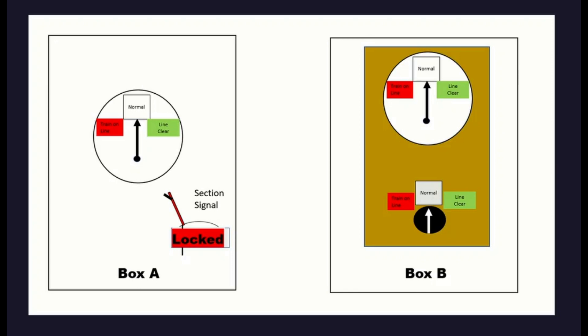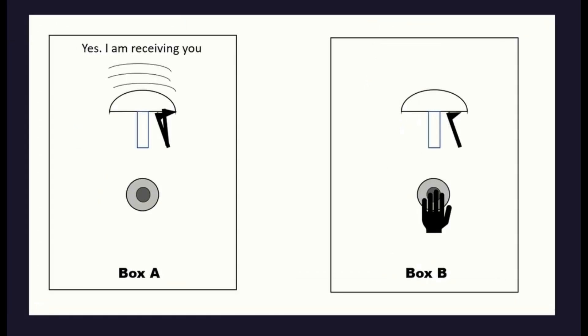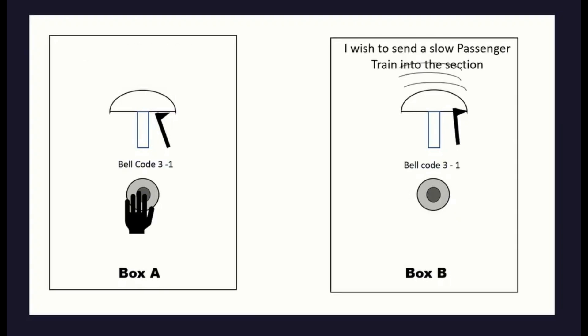Let us look at a train being released into a section. We'll start from scratch — no trains in the section. Indicators at both boxes are at normal. The commutator at box B is set to normal and the section signal at box A is locked. Box A wants to send a train into the section. The signaller at box A presses the bell plunger once, and the signaller at box B hears one on the bell and presses the bell plunger once to confirm receiving. The signaller at box A then sends a bell code that describes the type of train he wishes to send into the section.